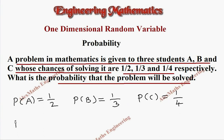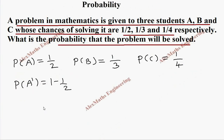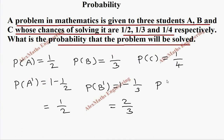Now P(A') is 1 minus P(A), which is 1 minus 1/2, that is 1/2. P(B') is 1 minus 1/3, which is 2/3. P(C') is 1 minus 1/4, which is 3/4.